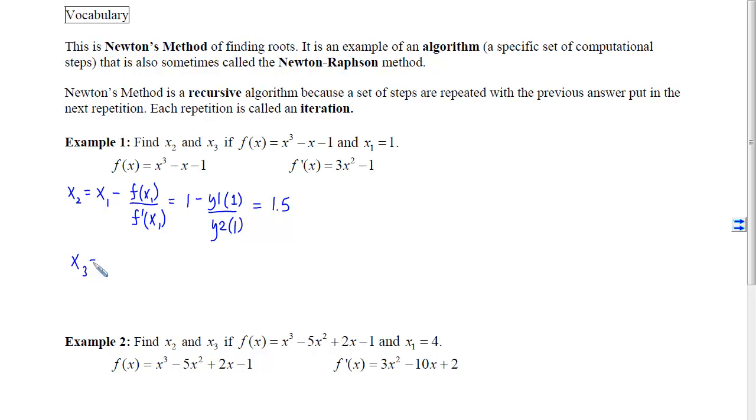We also want to find x sub 3, which according to Newton's method and the iterative process it prescribes, will have x sub 2 minus f of x sub 2 divided by f prime of x sub 2. Plug that in, get x sub 2, that's our 1.5. f of x sub 2 will be y1 of 1.5. And f prime of 1.5 will be y2 of 1.5.